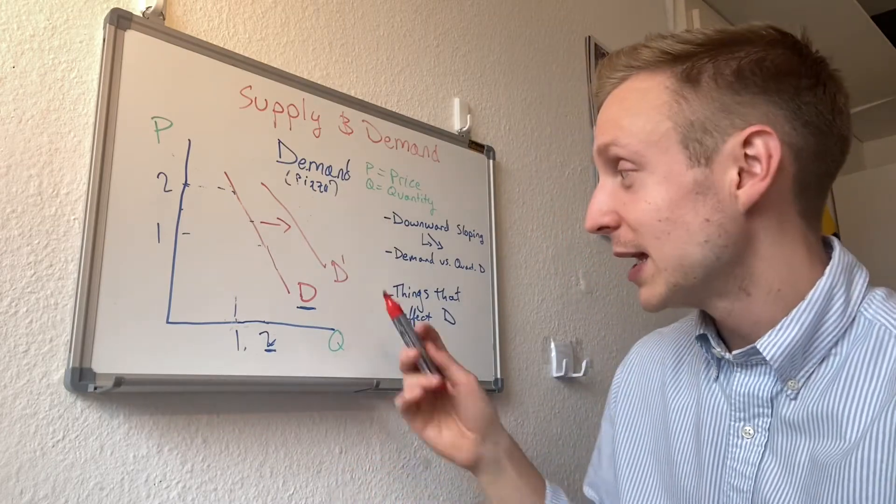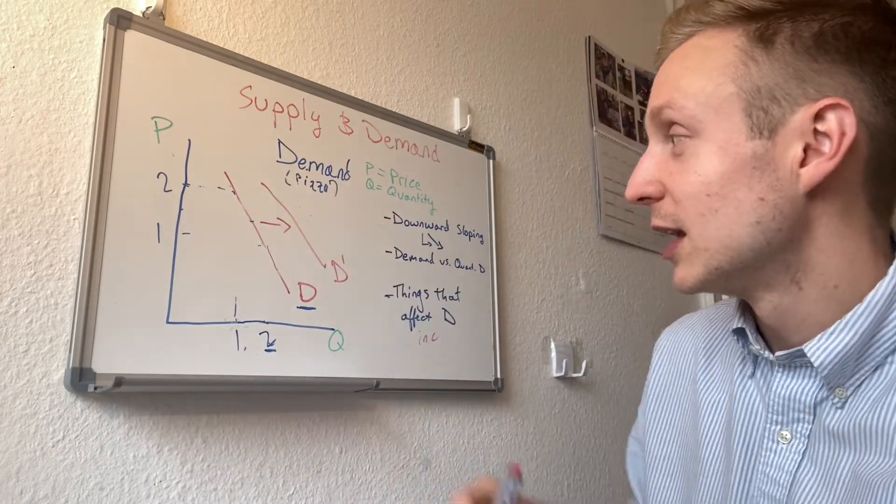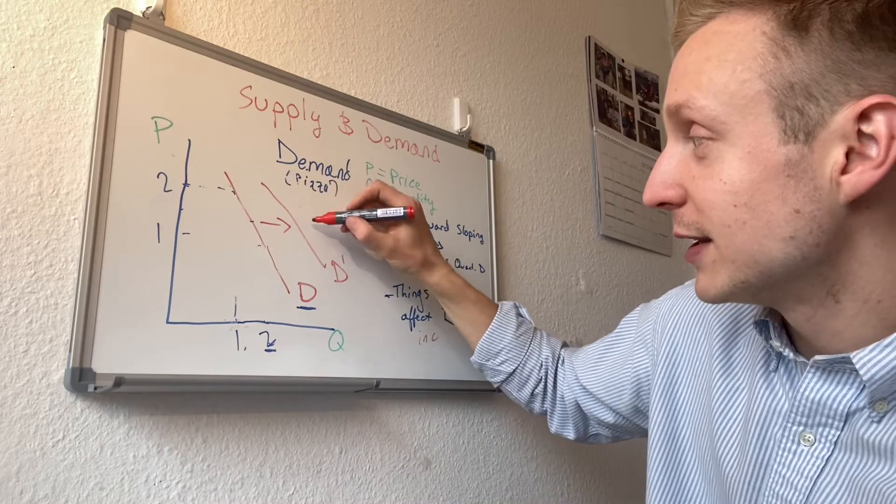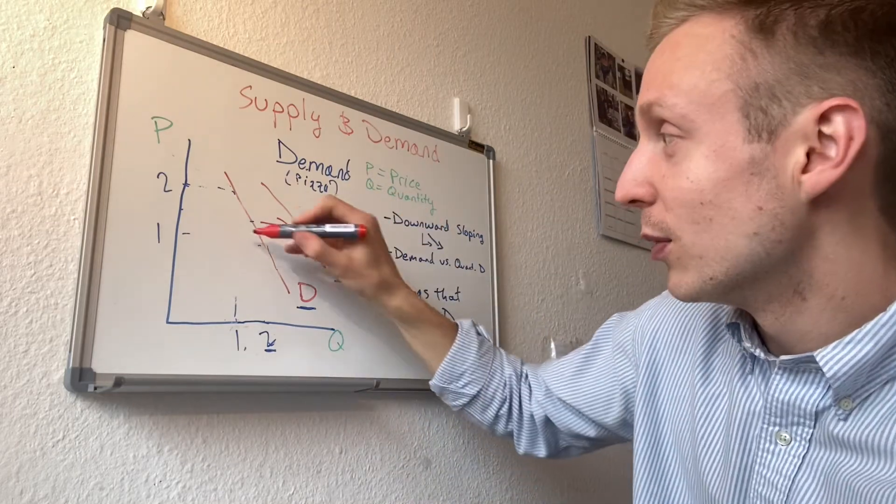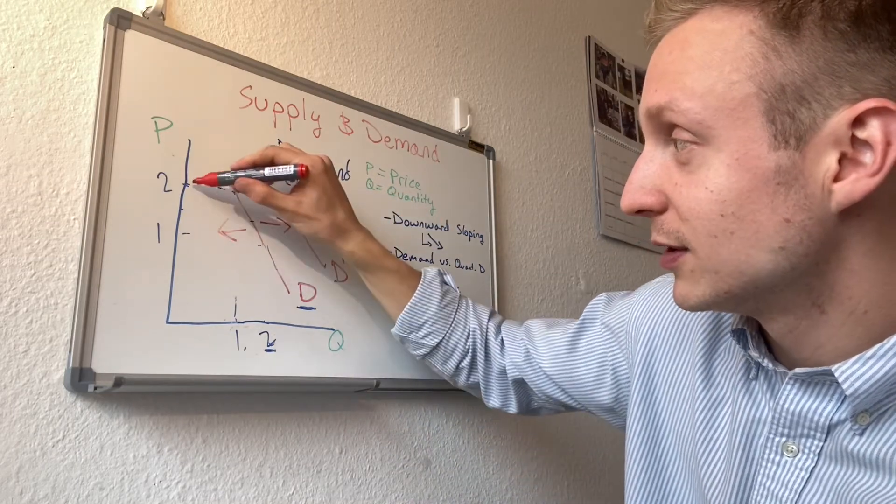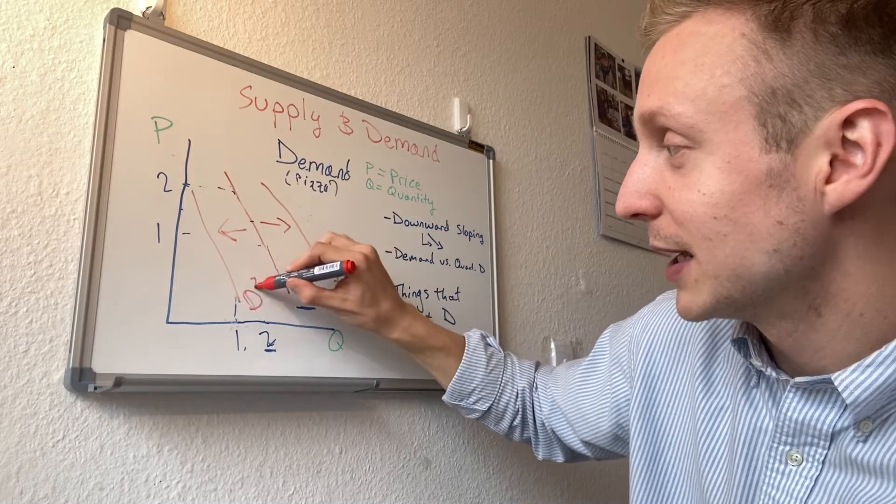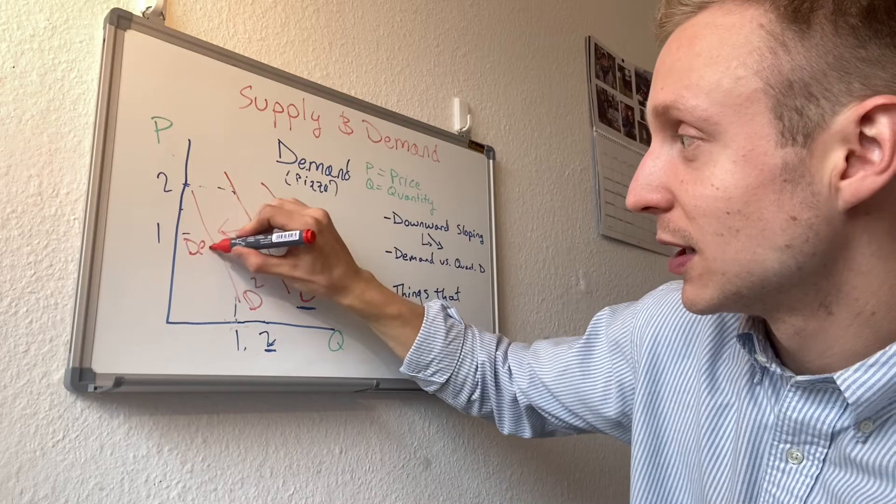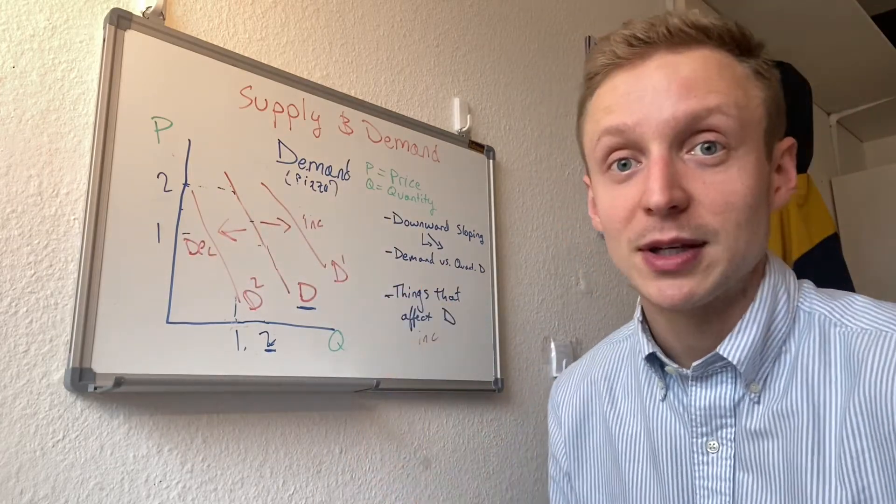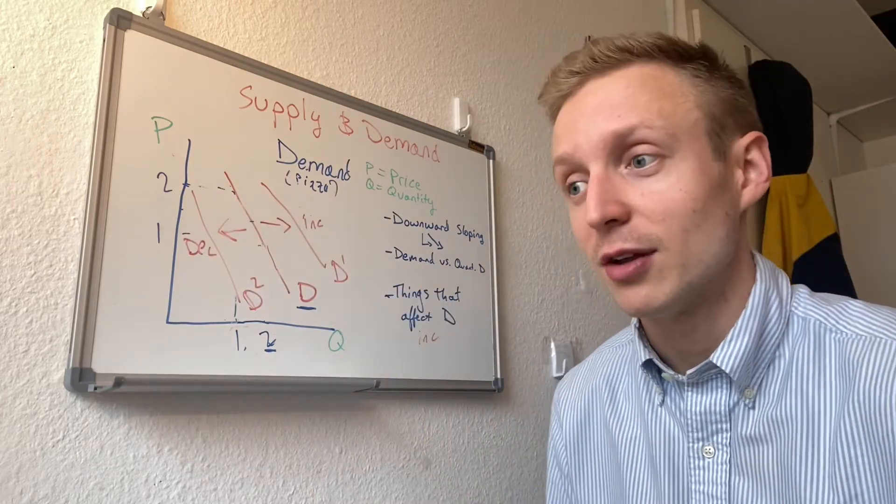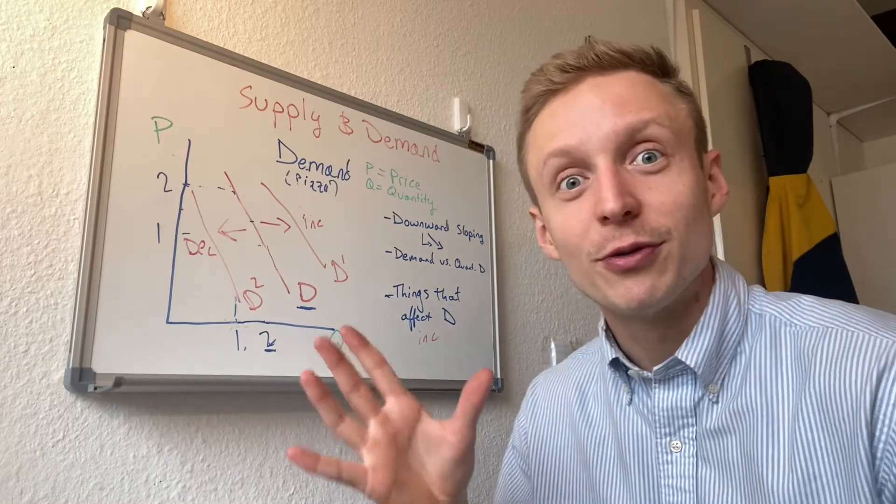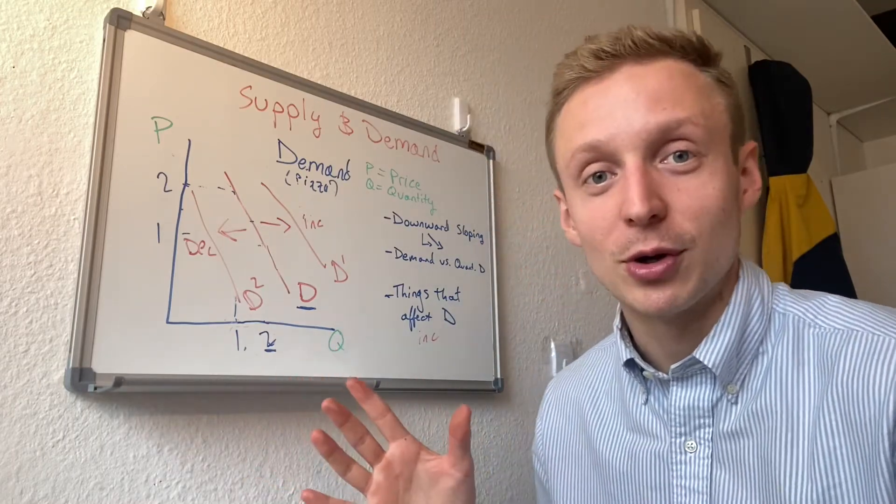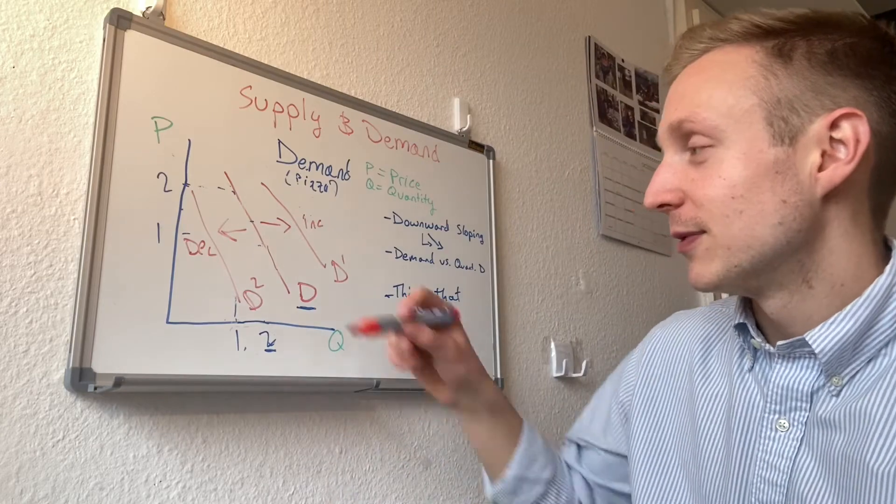So when demand shifts to the right, this is an increase of demand. When demand shifts to the left, this is a decrease in demand. So this is an increase, and this is a decrease. Or what would decrease demand? Maybe if incomes went down, or if tastes changed. All of a sudden there's a gluten-free trend and pizza's not cool anymore, right? So these types of things would decrease demand.